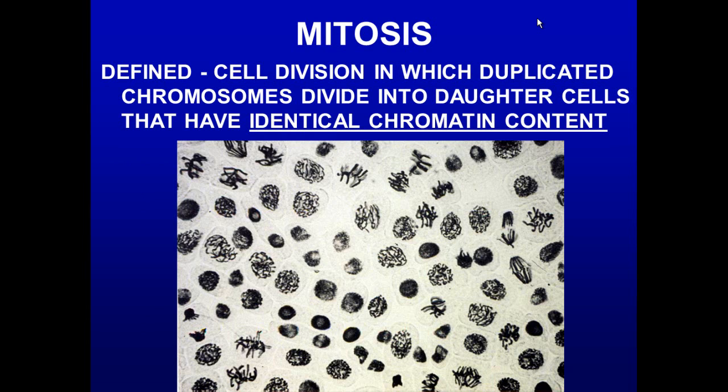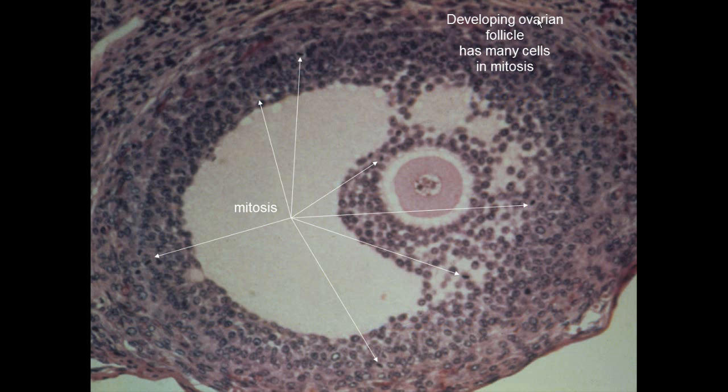One of the things we need to deal with in our conference is mitosis. Remember that mitosis is a process by which identical chromatin content is put into two daughter cells. We want identical content — no change. Here we can see in the ovary mitotic figures associated with the duplication of cells with the same DNA content.